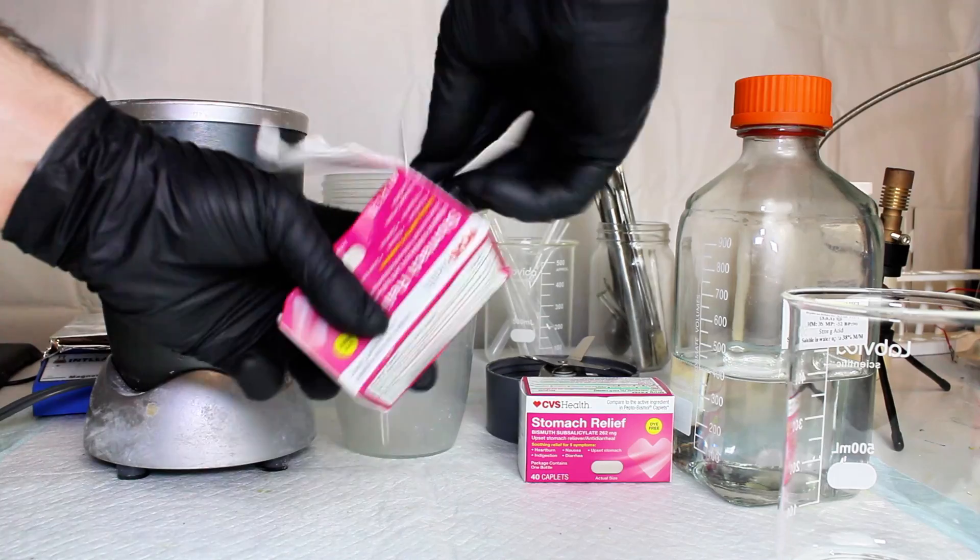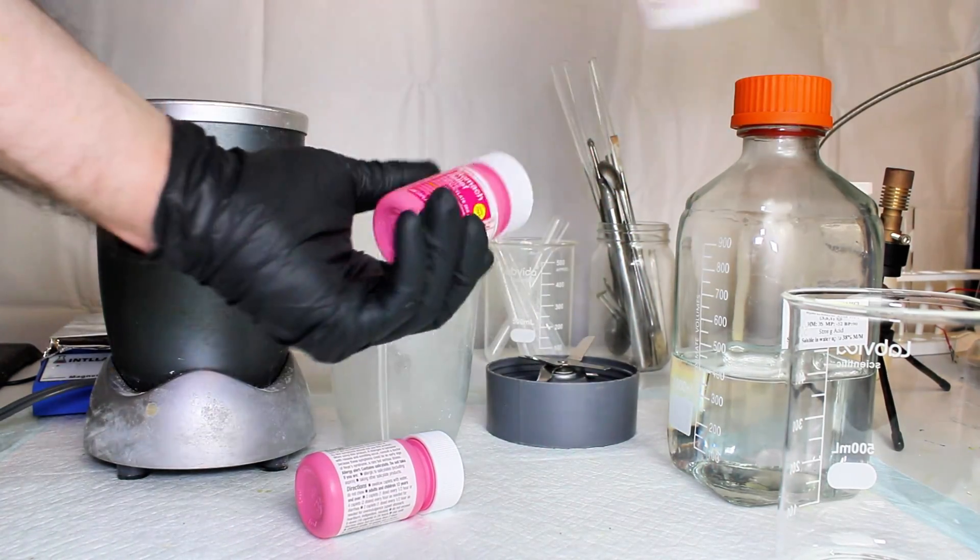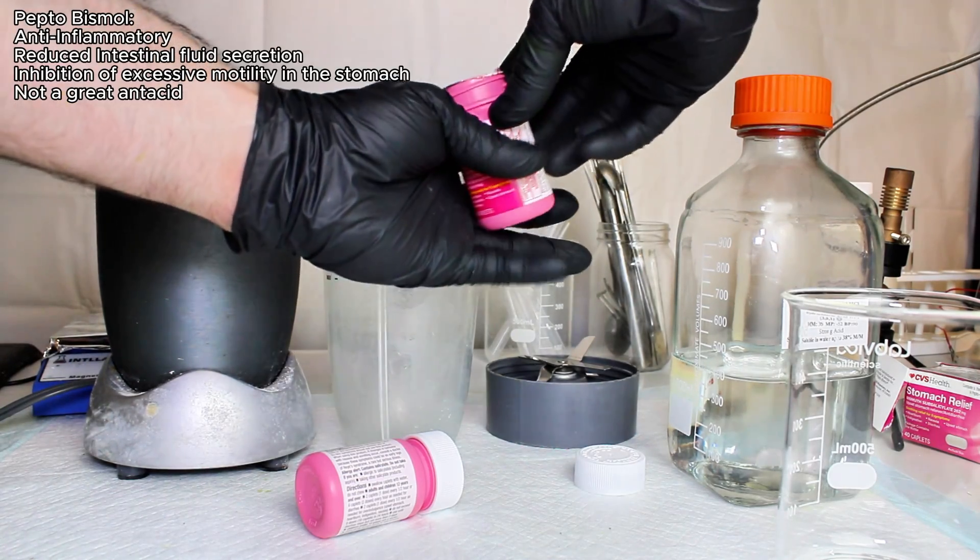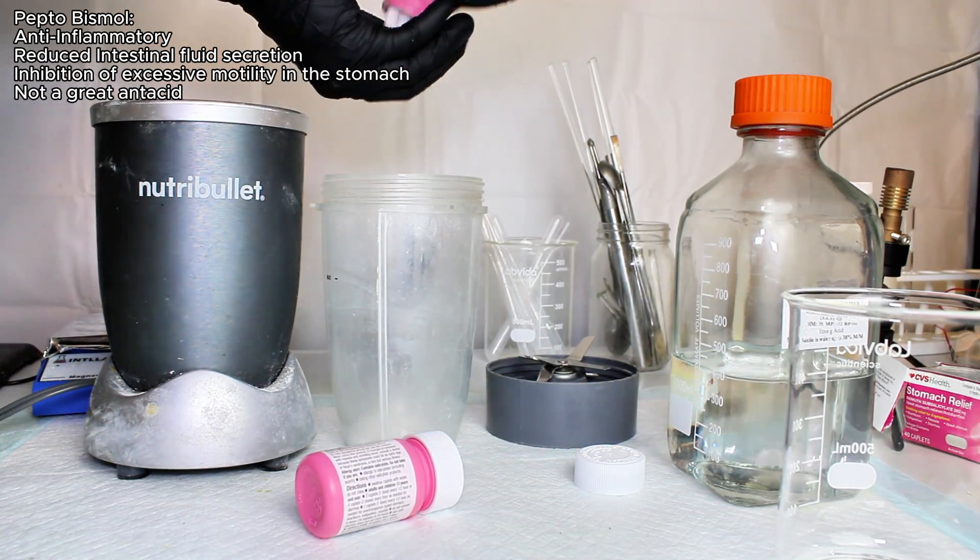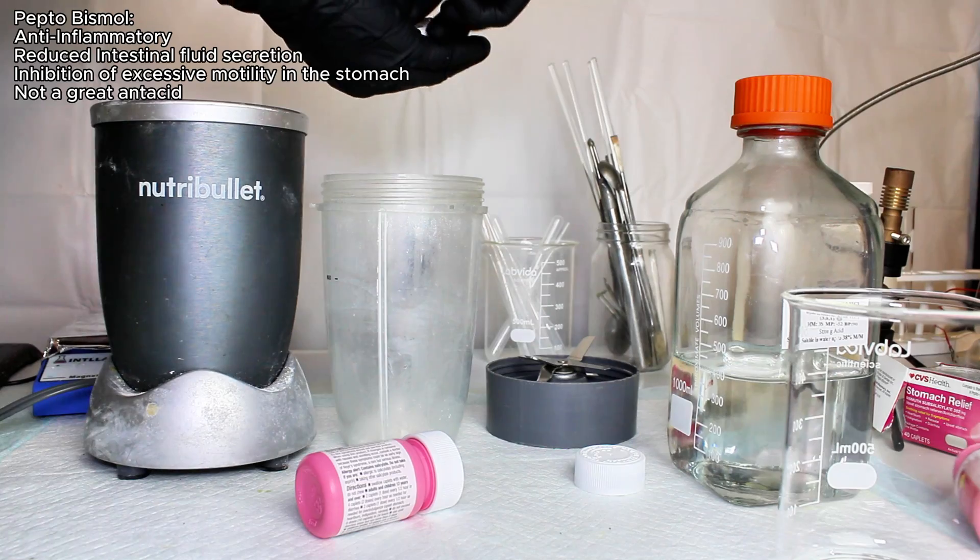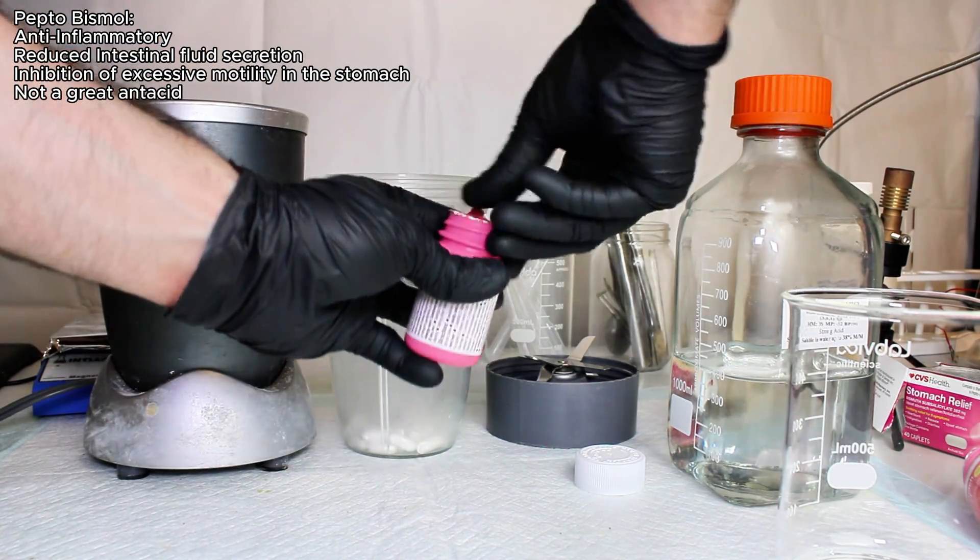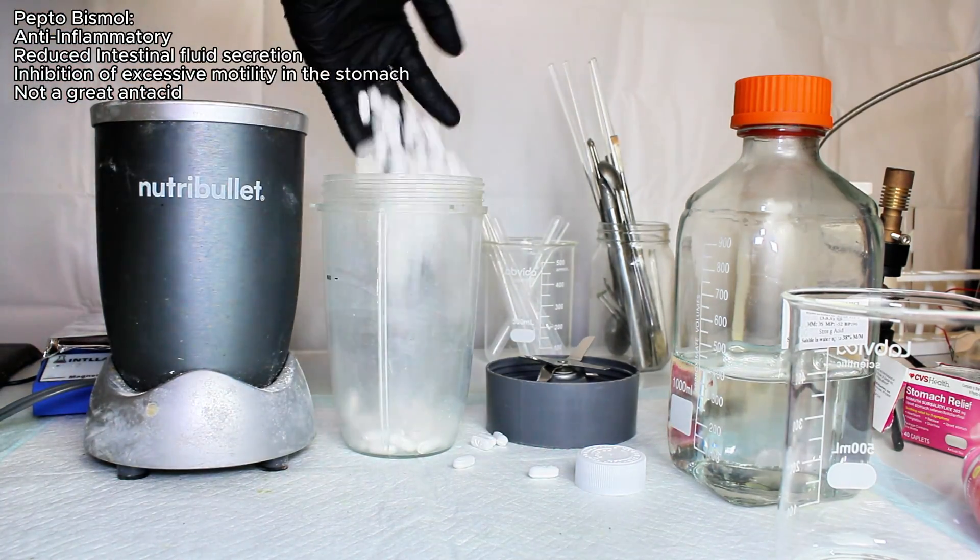When taken orally, this chemical reacts with stomach acid to form insoluble bismuth oxychloride and salicylic acid. As the active ingredient in aspirin, salicylic acid has anti-inflammatory properties, and the bismuth oxychloride inhibits intestinal fluid secretion and excessive motion in the stomach. These are the main therapeutic effects of Pepto-Bismol, and the chemical itself is actually a very weak antacid with no real buffering effect.